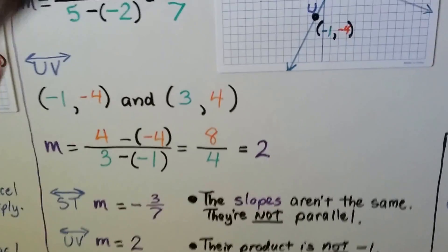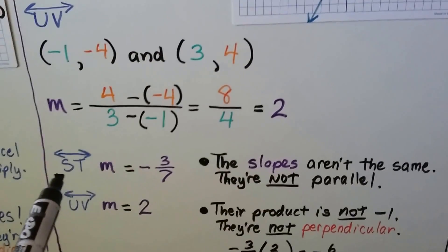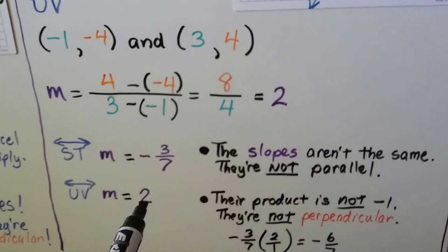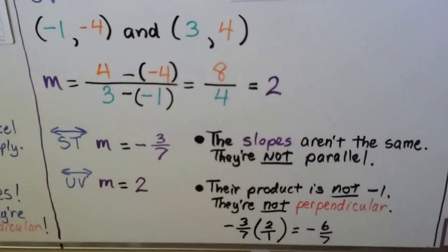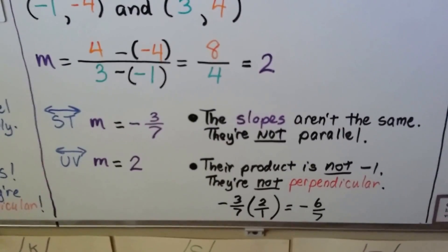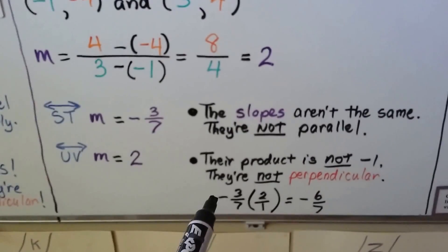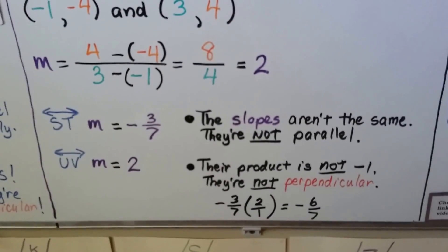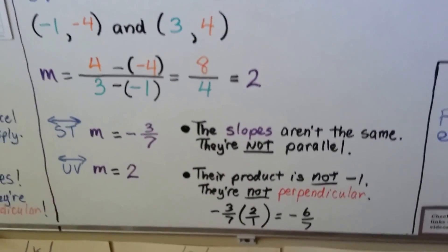Well, they're not the same, are they? So if line ST has a slope of -3/7 and line UV has a slope of 2, the slopes aren't the same, so they're not parallel. And their product is not -1. They're not perpendicular. When we multiply -3/7 times 2, we get -6/7. That's not -1.